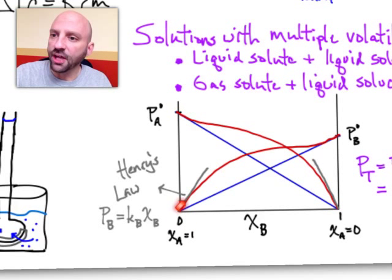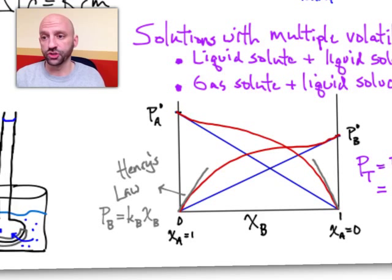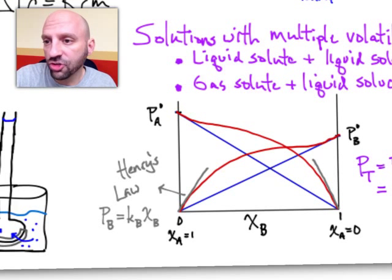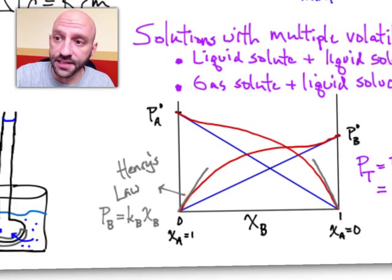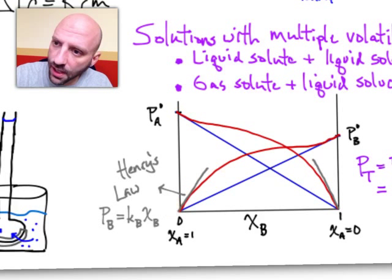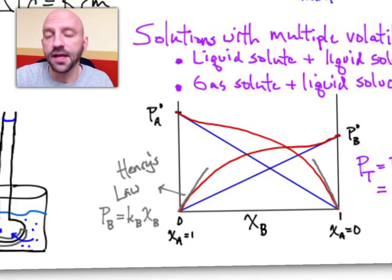I can use Henry's law to describe the behavior of the solution with respect to B at low concentrations. So at low concentrations of B, the positive deviation is somewhat of a straight line initially. And that straight line can be described by Henry's law.